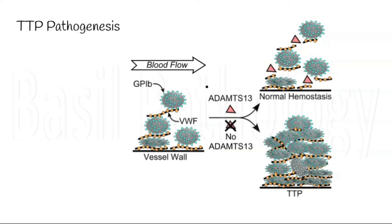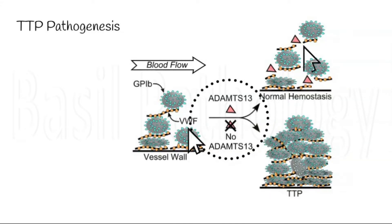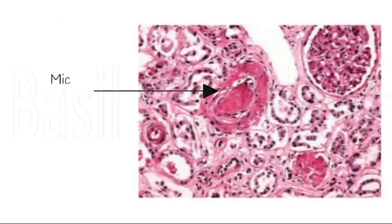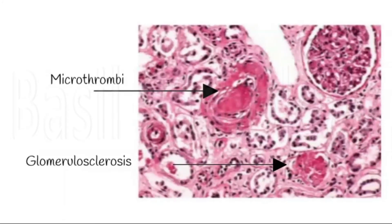Then coming to the pathogenesis of TTP. ADAMTS13 is a protein that helps in regulation of von Willebrand factor. Usually it cleaves the von Willebrand factor multimers and deactivates their function. When there is deficiency of ADAMTS13 protein due to inherited mutations or destruction by autoantibodies, the active multimers of von Willebrand factor remain and activate platelets to form thrombus. This consumes more platelets and causes thrombocytopenia, leading to formation of microthrombi in the glomerular capillaries and small intertubular blood vessels, resulting in glomerular sclerosis and finally renal failure.